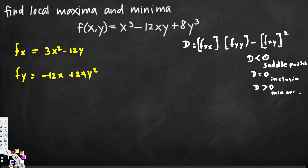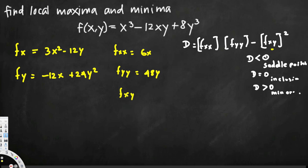Now we need to calculate the second derivatives. We have already found the first derivative with respect to x, so now we take its derivative with respect to x again to get fxx, which gives us 6x (y is constant so that term is 0). For fyy, x is constant so the first term is 0, giving us 48y. For fxy, we take the first x-derivative and differentiate with respect to y: x is constant so the first term is 0, and the derivative of negative 12y with respect to y is just negative 12.